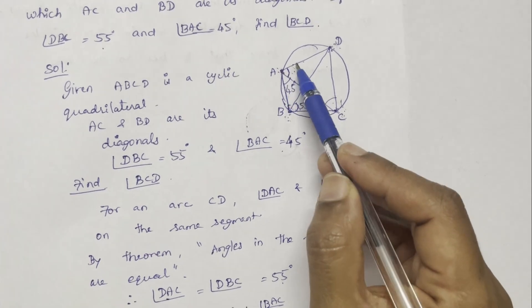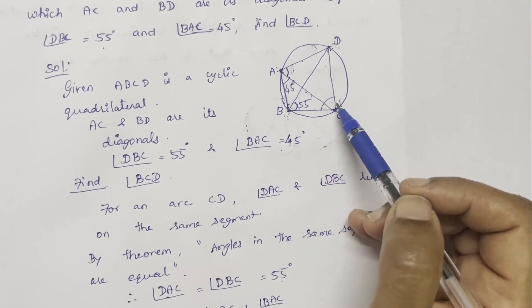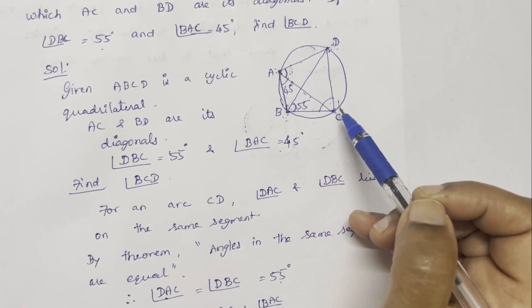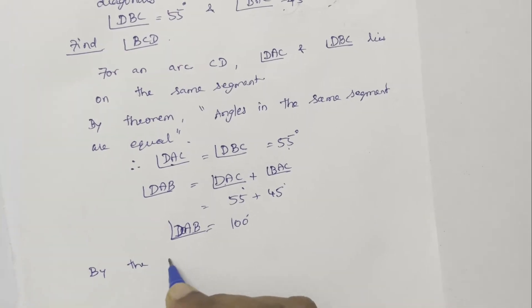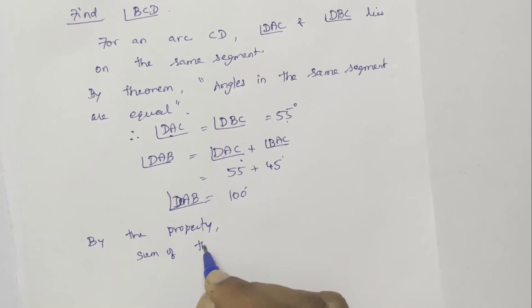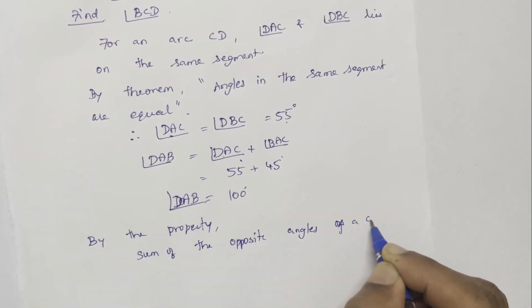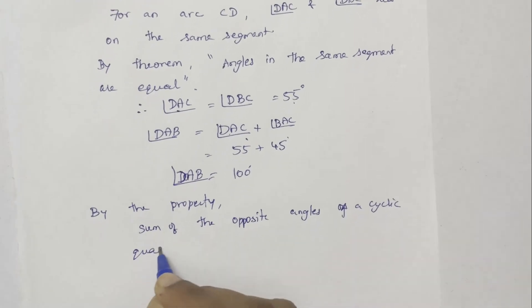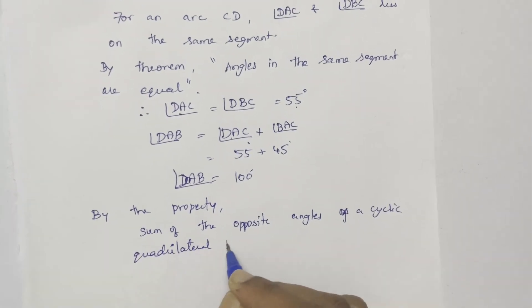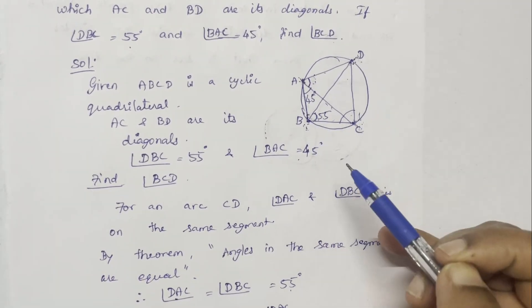In the cyclic quadrilateral, opposite angles sum to 180 degrees. Therefore, angle DAB plus angle BCD equals 180 degrees.